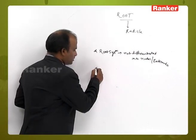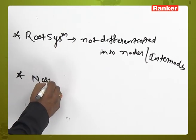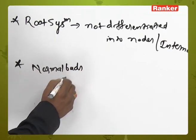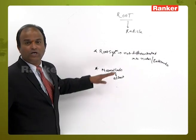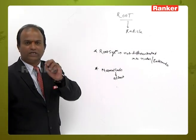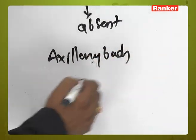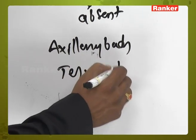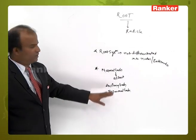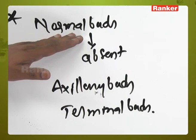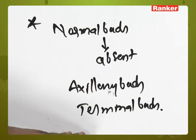In the root system, whether axillary buds (normal buds) are present or absent — in the root system, normal buds (axillary buds) are absent. The root system does not show axillary buds, but it does show terminal buds.